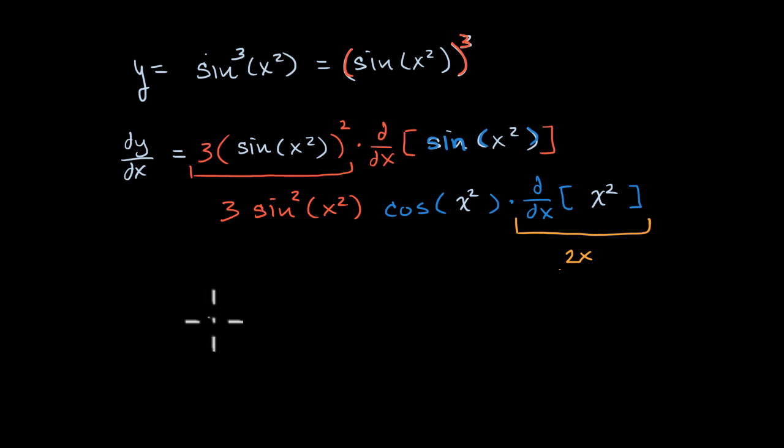And so if we wanted to write dy/dx, we get a little bit of a mini drum roll here. dy/dx, I'll multiply the three times the 2x, which is going to be 6x. So I covered those so far. Times sine squared of x squared.